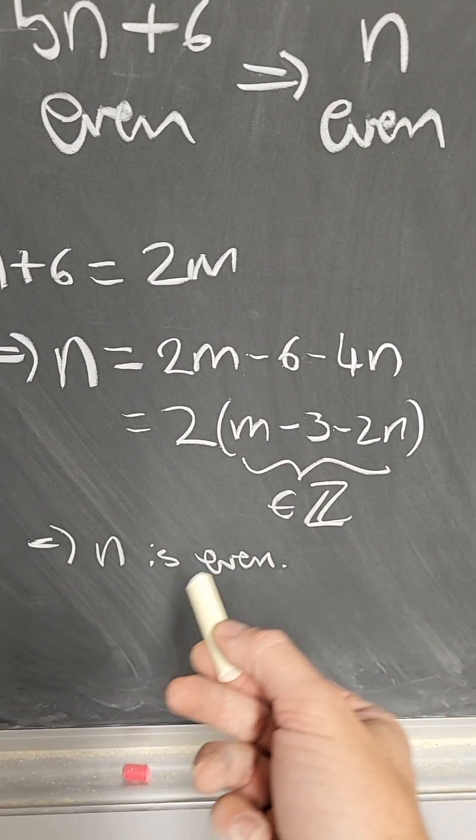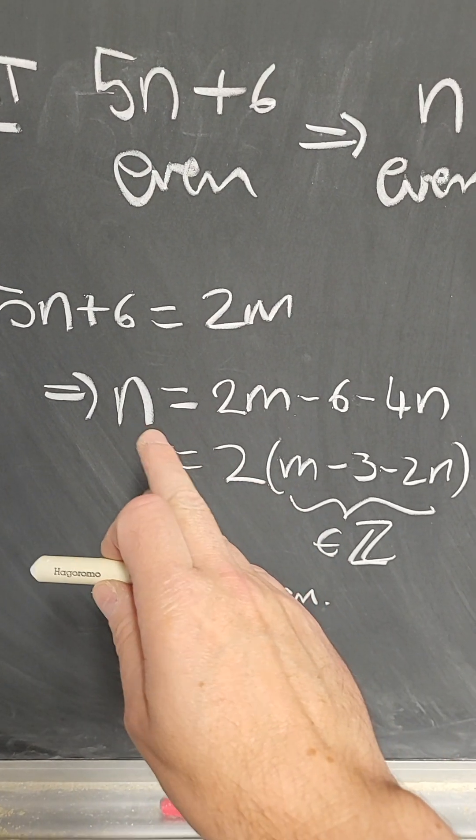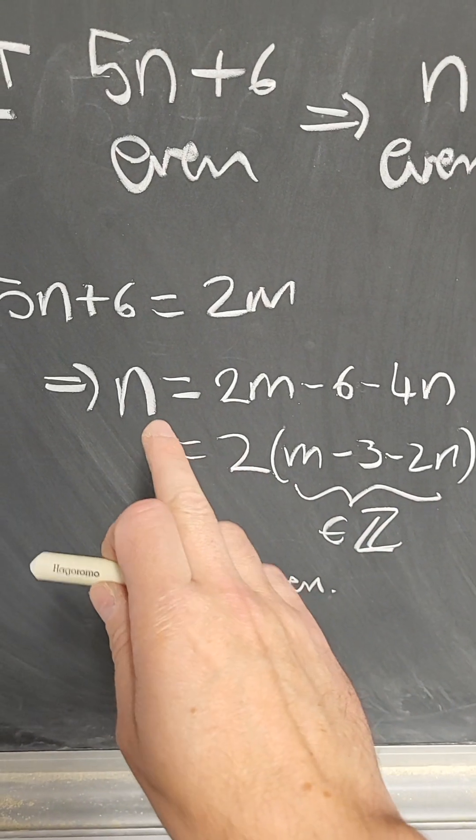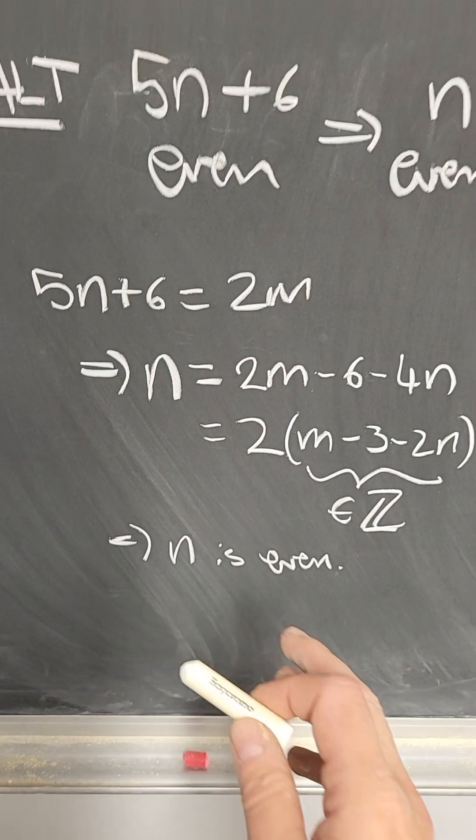And that's twice an integer, and therefore, n is even. That's kind of a tricky proof because you are rewriting n in terms of n, but that doesn't matter. All that matters is that you're writing n as twice another integer, and therefore, n would have to be even.